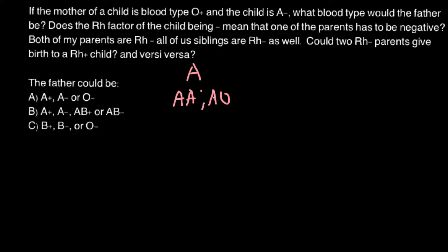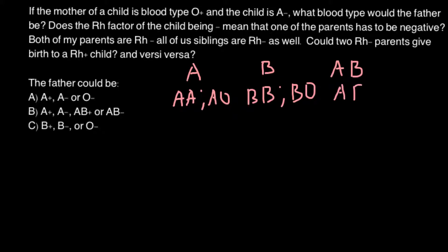Phenotype B can be made by two genotypes: BB and BO. Blood group AB can be made by one genotype, which is AB. And blood group O can be made by one genotype, which is OO.